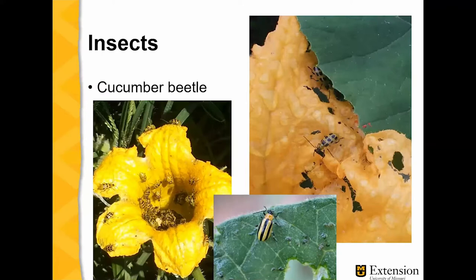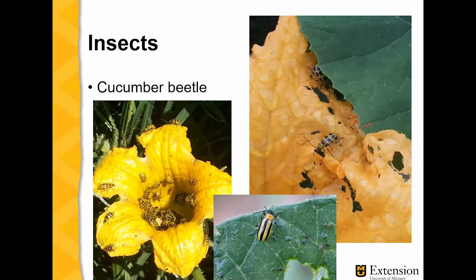Cucumber beetles. We have spotted cucumber beetles and we also have the striped cucumber beetles. They feed on the plants. You can see this squash blossom — I took this in the drought in 2012. That was the worst insect year for cucumber beetles I have ever seen, so most of my squash blossoms looked like this. Because it was a drought year, I wasn't going to get any fruit anyway, so I was not working at controlling them.